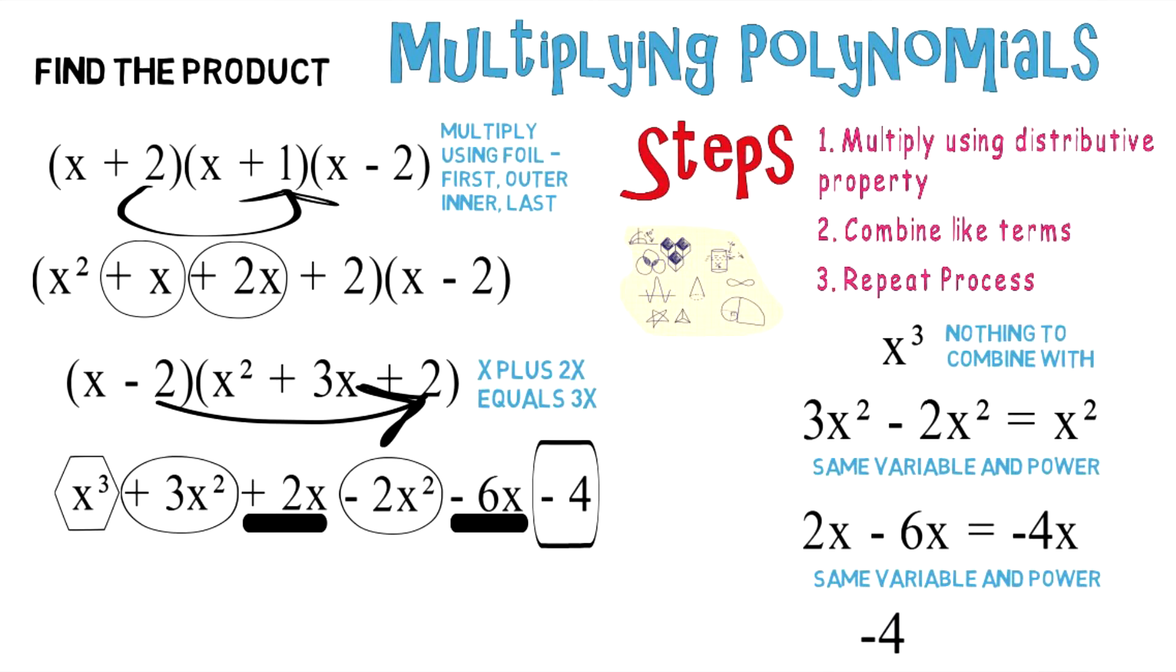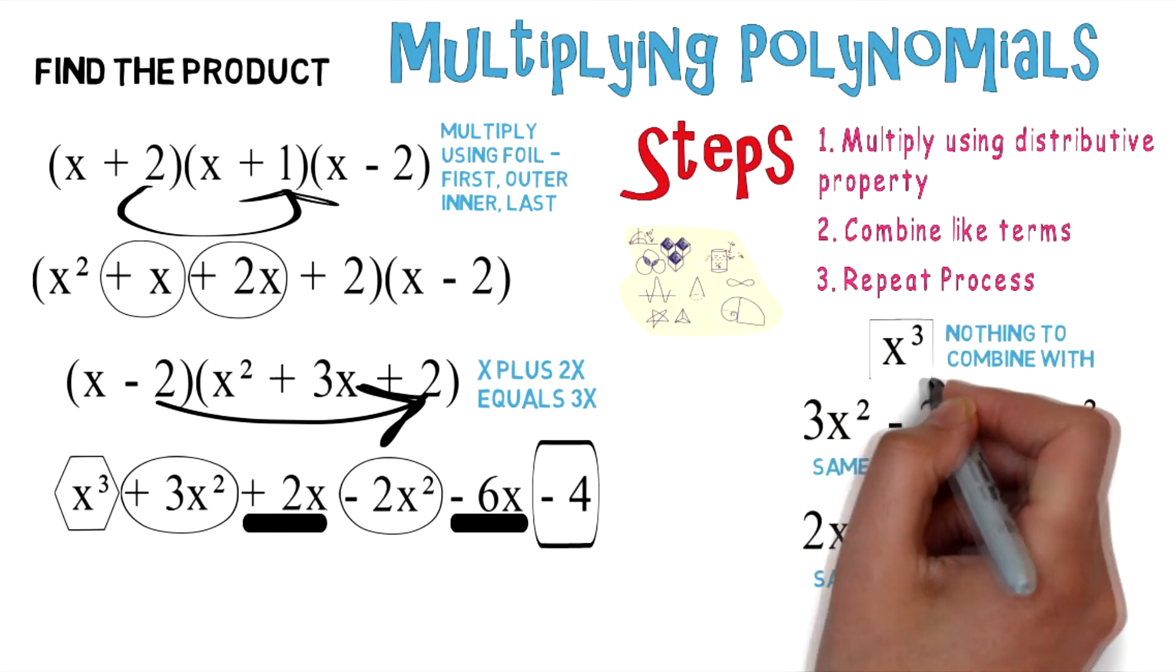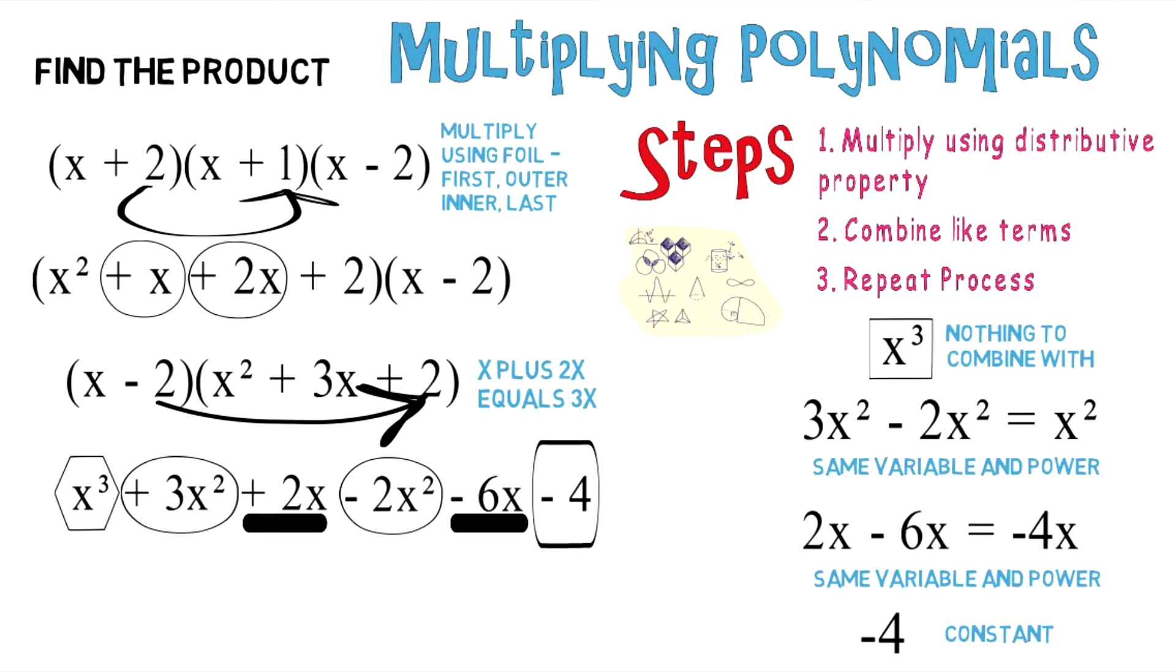-4 is just a constant. So let's identify everything we have: x³, x², -4x, and -4. We're going to write these down in descending order, and your final answer is x³ + x² - 4x - 4.